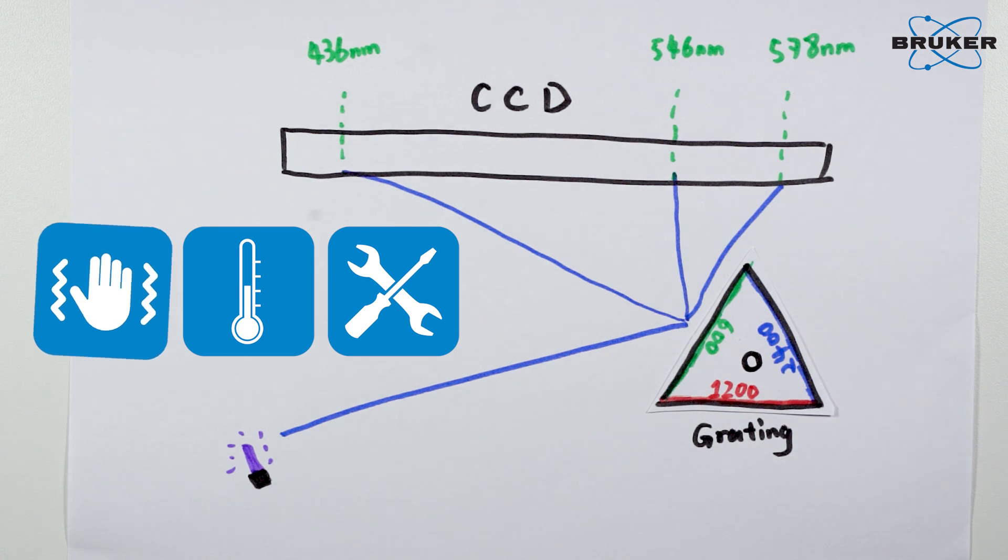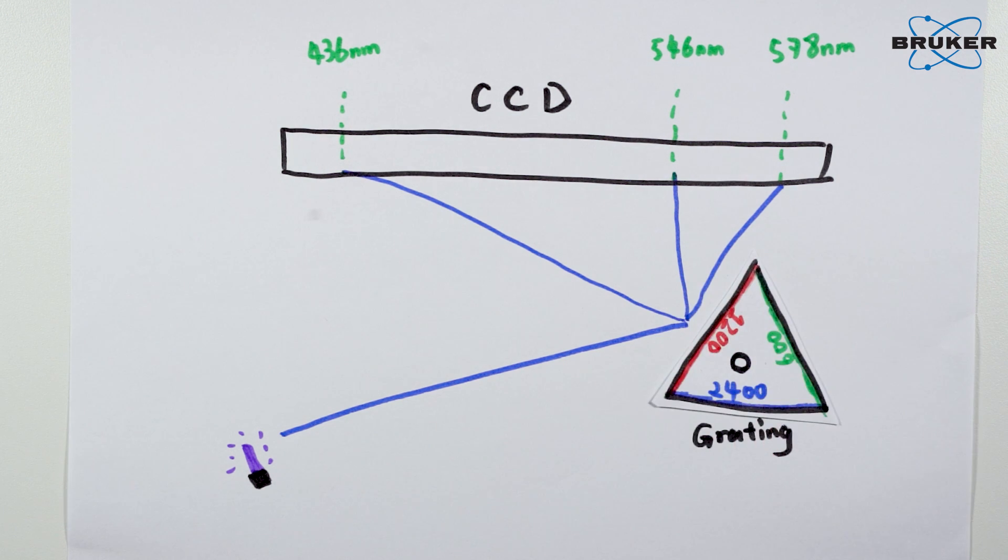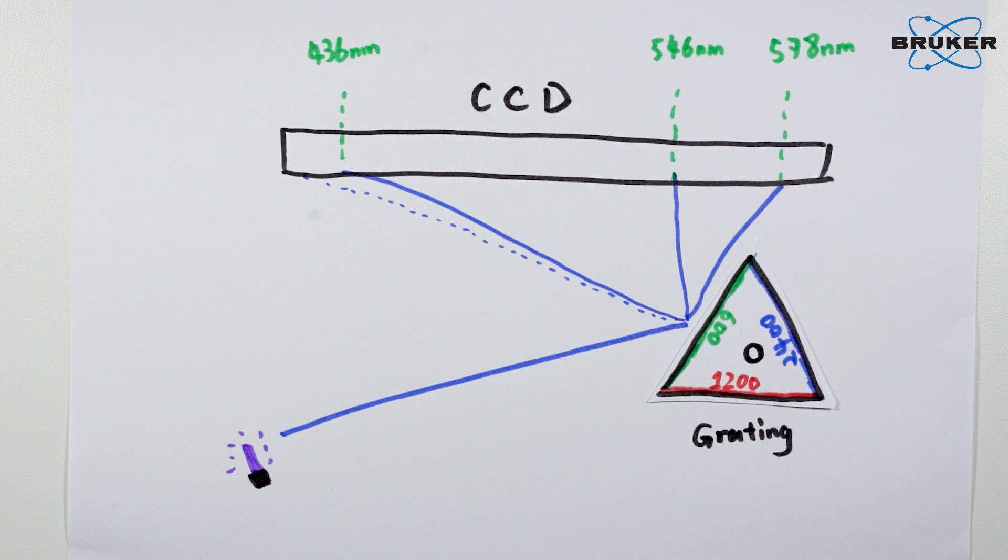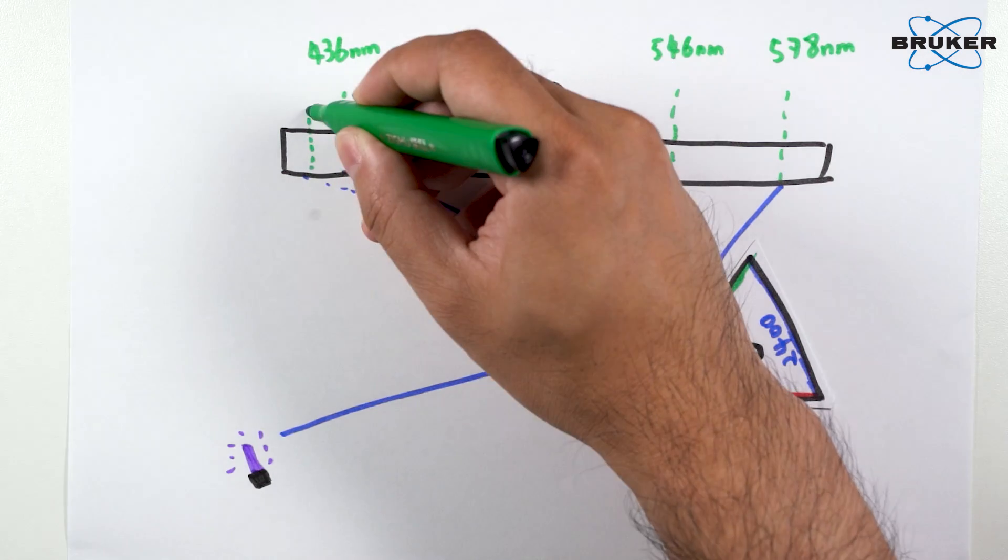If you turn the tilt to a different angle and turn it back again, the positioning is inevitably slightly different. Due to the long path length to the CCD, the difference is even amplified.